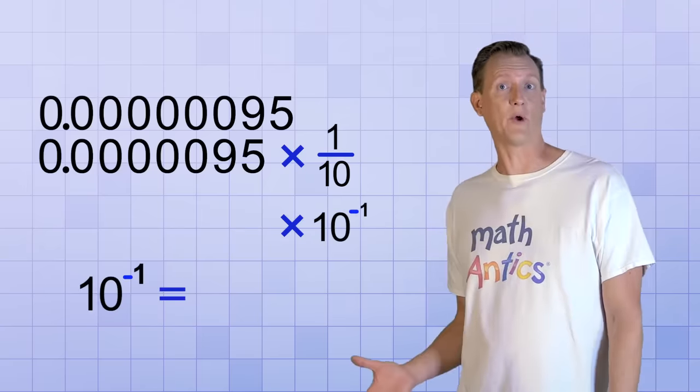Alright, that's the basics of scientific notation. It may seem a little confusing at first, but as you get more experience with it, it makes a lot of sense. And when it comes to writing really big or really small numbers, it's totally worth it. And even if you understand how scientific notation works, it may take some practice to get good at converting back and forth between it and regular form. So be sure to practice on your own. As always, thanks for watching Math Antics and I'll see you next time! Learn more at MathAntics.com.